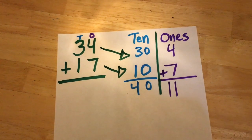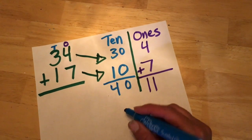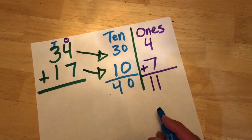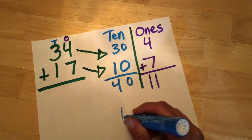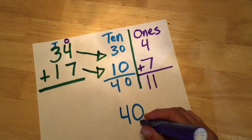So now we have 40 and 11, and we're going to add those together. So we're going to line up the ones and the tens.